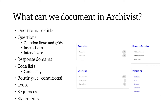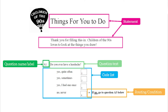So how do we create this metadata using Archivist? Archivist allows us to document questionnaires to DDI standards, meaning that when entering questionnaires we break them down into various DDI elements, which you can see on the slide. You don't need to know anything about DDI to do this — you just need to be trained on how to identify the questionnaire elements.